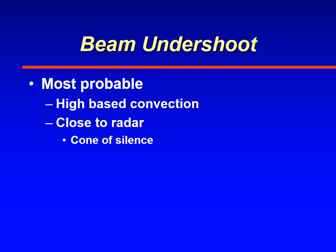Undershoot can also happen with high-base convection. In the high plains of the United States, thunderstorms can develop with bases around 10,000 feet, and you can miss those if the thunderstorms are close to the radar.